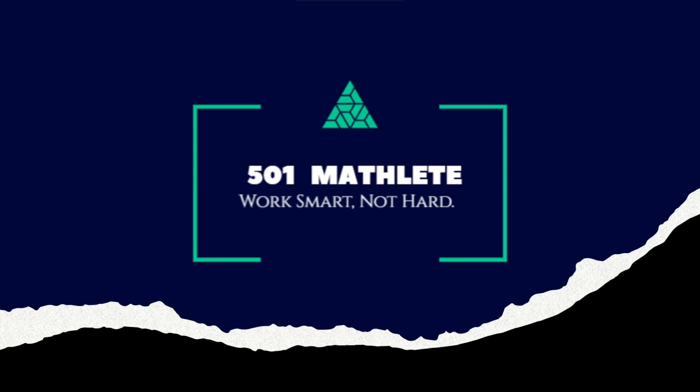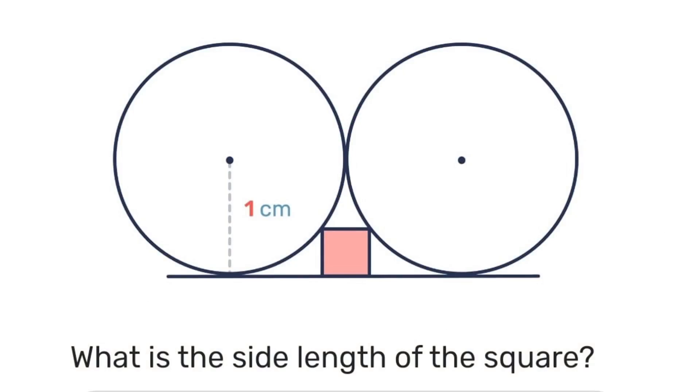Good day and welcome to 501 Mathlete where we work smart not hard. In today's problem we're given this diagram of two circles of unit length and sandwiched in between them is a tiny square where we determine the length of the square. Pause the video here and see what you can come up with.